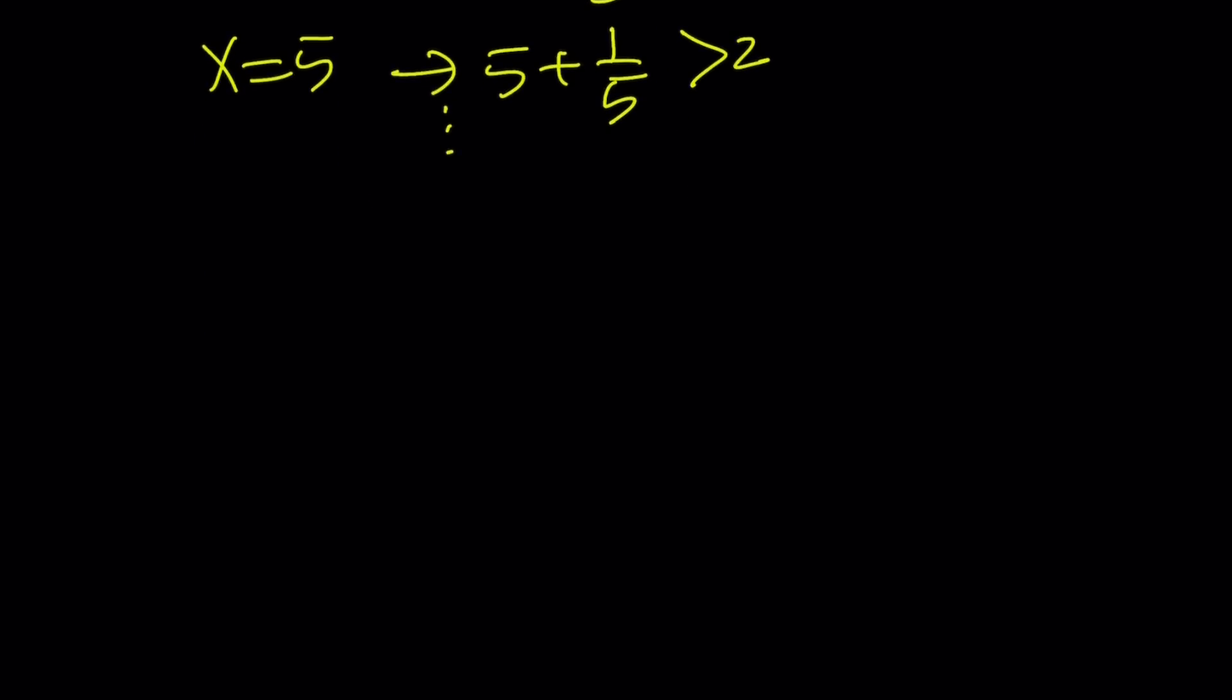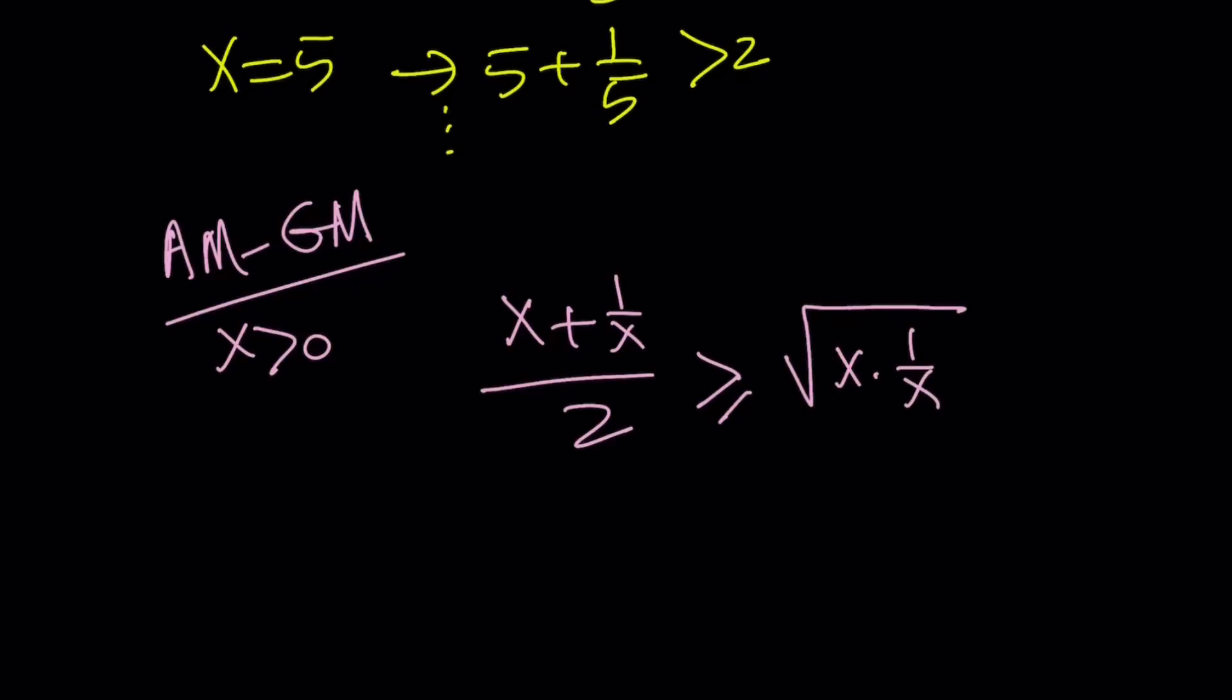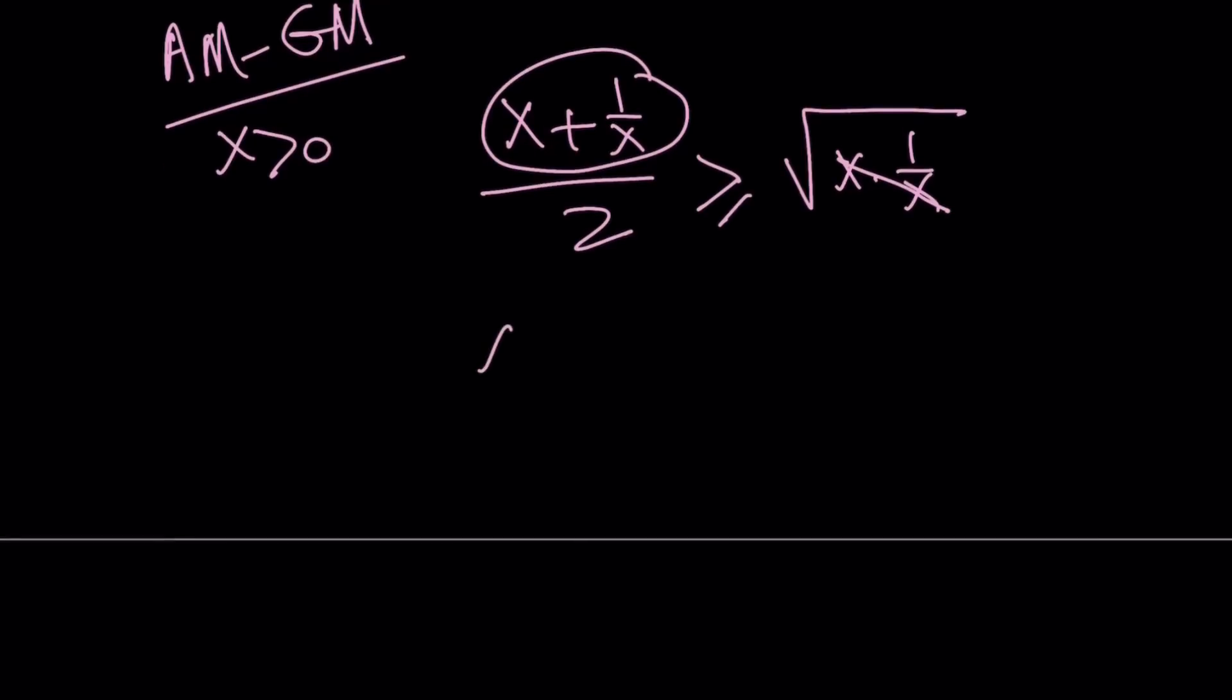But let's go ahead and look at the AMGM from another perspective. So we're going to use AMGM again. But this time, we're going to use it on x and 1 over x. And again, x is positive in this case. And if we have a positive x, x plus 1 over x divided by 2, which is the arithmetic mean or the average, is always going to be greater or equal to the square root of x times 1 over x. But x times 1 over x, as long as x does not equal 0, is equal to 1.